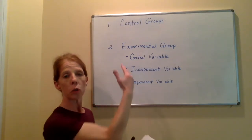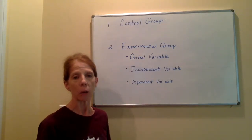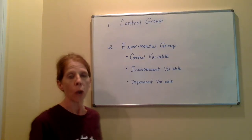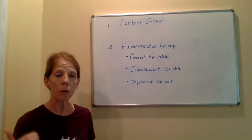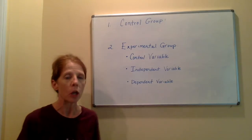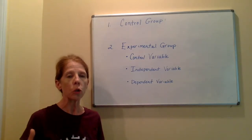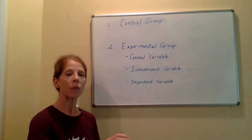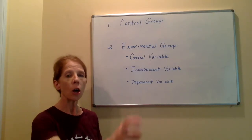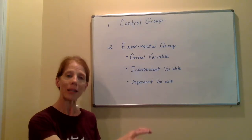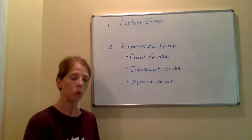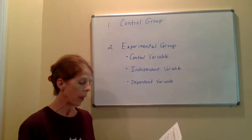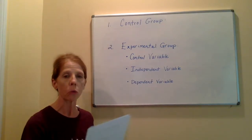The first thing you need to understand is there are two separate groups you need to have in an experiment. One is the control group, and the second is the experimental group. Why do we have two separate groups? When we're designing an experiment, we are looking to test certain parameters, but in order to test those, we have to have something that is unchanged against which to test it. So that would be your control group.